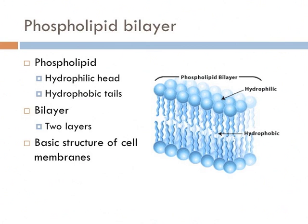Remember, phospholipids have hydrophilic heads and hydrophobic tails. So when they're in water, the hydrophilic heads turn toward the water and the hydrophobic tails turn away from it. This causes a bilayer — two layers — with water on both sides. This is the basic structure of the cell membrane.